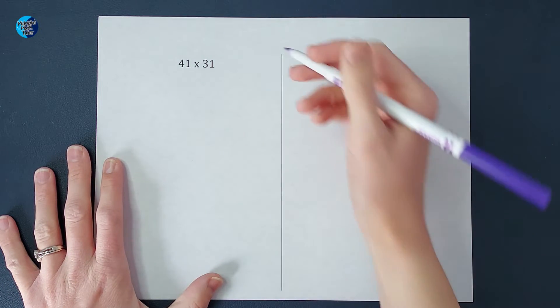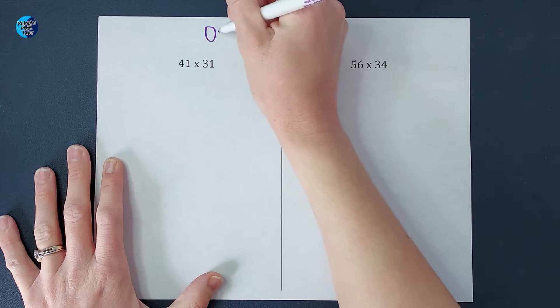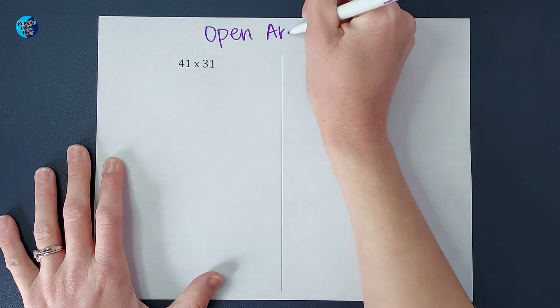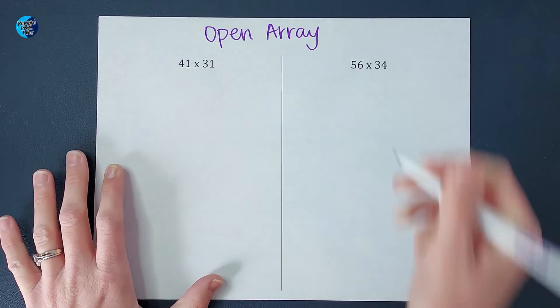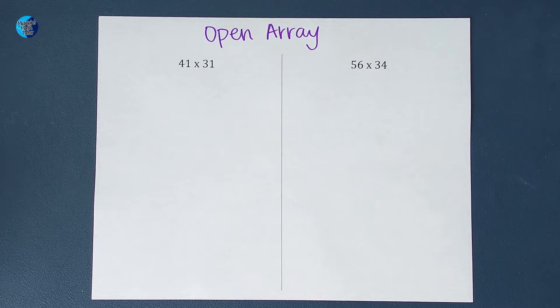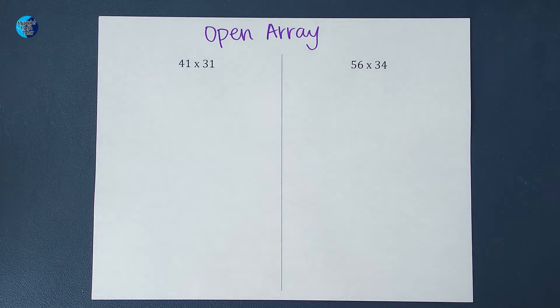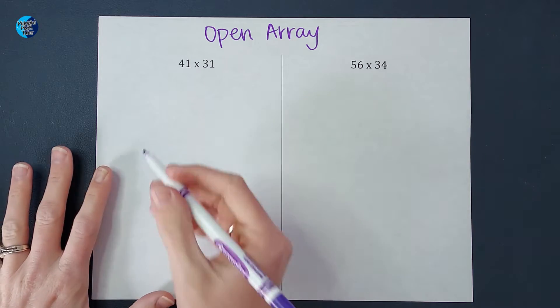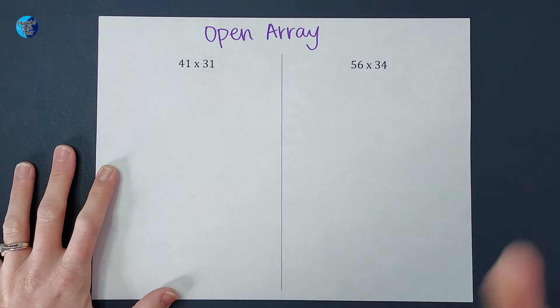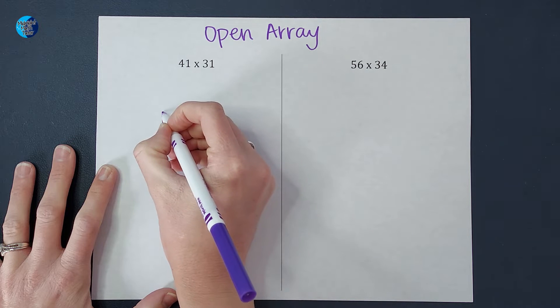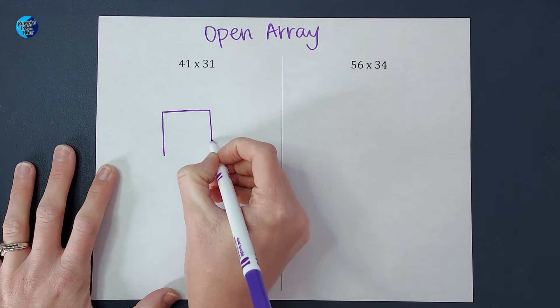For this strategy, we are going to do what is called an open array, or you might also hear it called an area model. If you have learned partial products, this is very similar, but it's a lot more visual, which I really like. For this, we're multiplying two two-digit numbers, so we are going to draw a grid that is two by two.